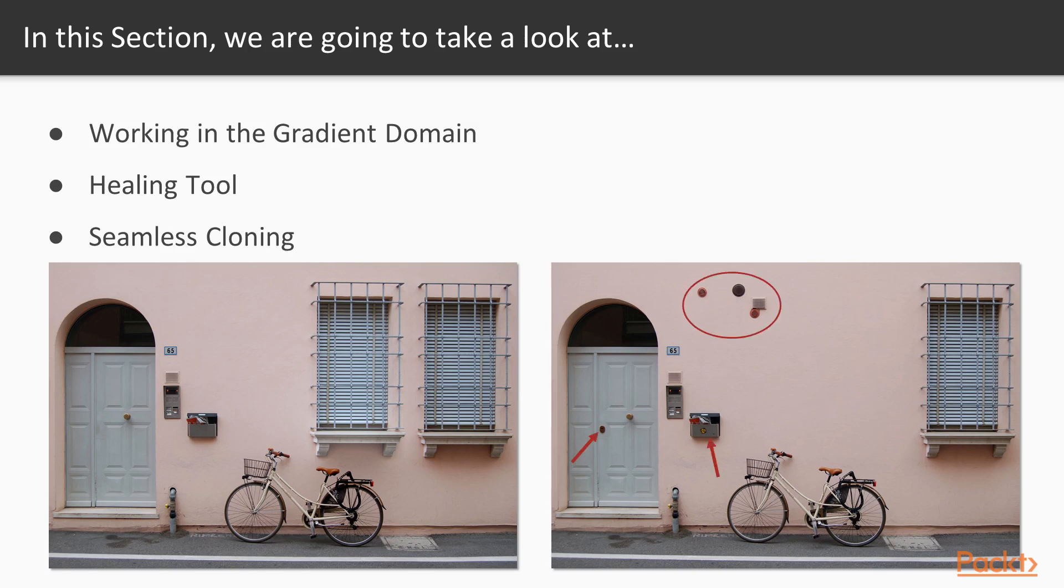I used Inpainting to remove the door's keyhole and the post box stickers. I used Seamless Cloning to remove the air vents by cloning a part of the blank wall over them.